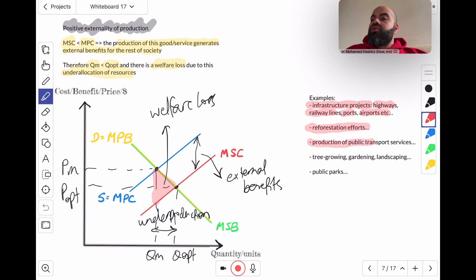The production of public transport services. Again, public transport is much better for the environment. If 40 cars are off the road because the people driving those cars are all taking a bus or a train, that's good for the environment. Tree growing, gardening, landscaping, all of these services make the area that we live in look good. They generate positive externalities. Public parks is the same thing. All of these are examples of products that generate positive externalities of production.